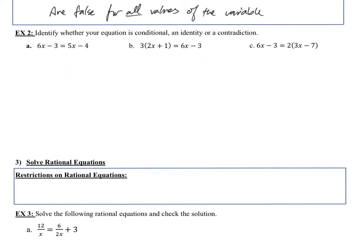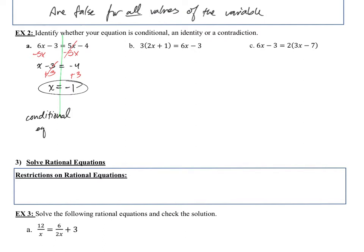Let's identify whether each equation is conditional, an identity, or a contradiction. For the first equation, we have x on two sides. Subtracting 5x from both sides leaves x minus 3 equals negative 4. Adding 3 to both sides gives x equals negative 1. We have one answer, so this is a conditional equation — true only with the condition that x equals negative 1. No other answer works.